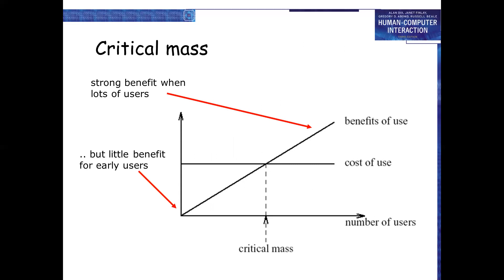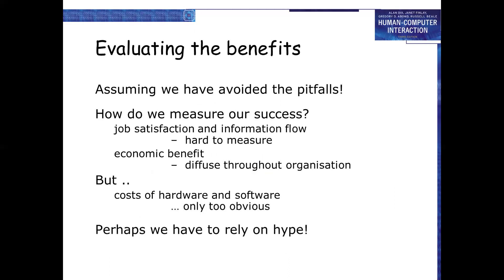The critical mass graph shows strong benefit when there are lots of users, but little benefit for early users. The solution is to increase the zero-point benefit. Evaluating benefits: assuming we have avoided the pitfalls, how do we measure success? Job satisfaction and information flow are hard to measure; economic benefit is diffuse throughout the organization, but the cost of hardware and software is only too obvious.